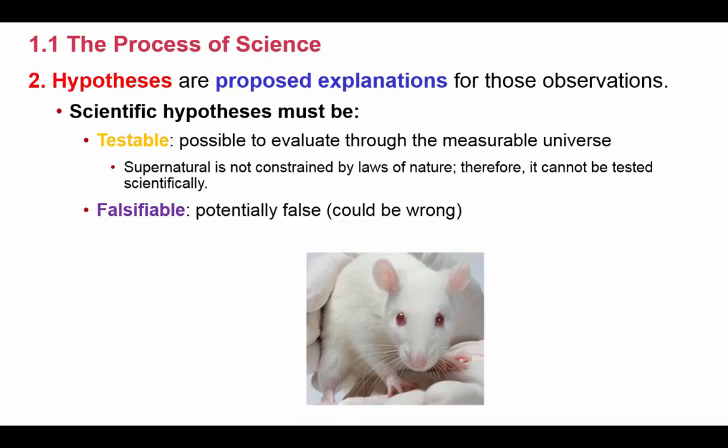Once you've made observations and have a question, the second step is to formulate a hypothesis. We've been taught that a hypothesis is an educated guess, and really that's what it is. The book's definition is that a hypothesis is a proposed explanation for what you've observed — your best guess as to why something has occurred. There are two key characteristics: first, a hypothesis must be testable, meaning there has to be a way to determine if it's accurate.